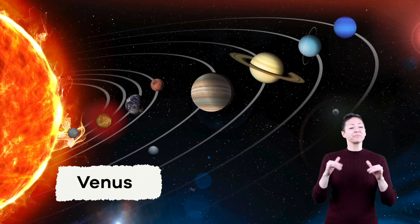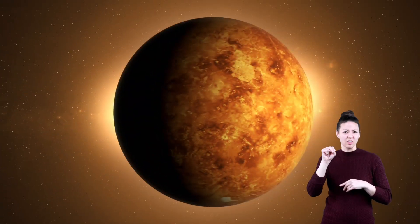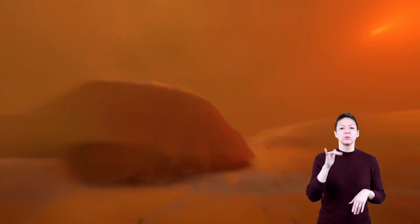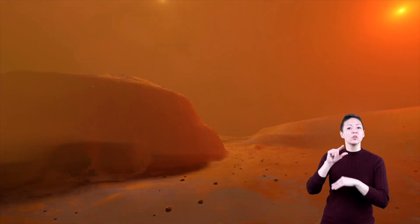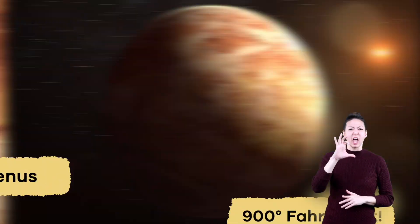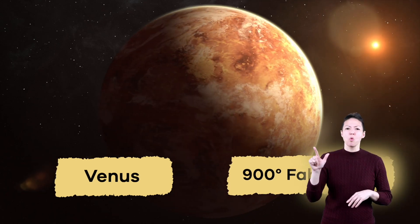However, Mercury is not the hottest planet in our solar system. Venus is. Even though Venus is not the closest planet to the Sun, it is the hottest. Unlike Mercury, which has a thin atmosphere, the atmosphere on Venus is very thick. Its atmosphere traps heat from the Sun, so the planet gets extremely hot. Venus is about 900 degrees Fahrenheit, making it the hottest planet of them all.